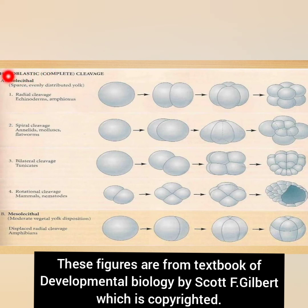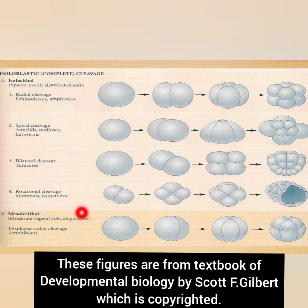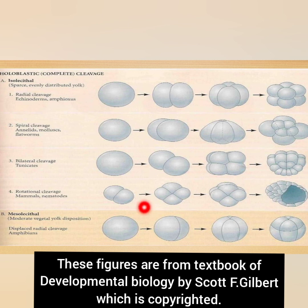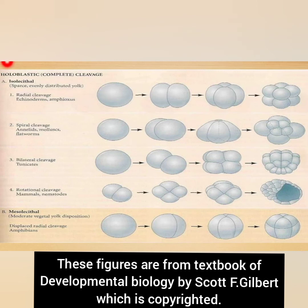We have now discussed all the isolecithal cleavage patterns in holoblastic complete cleavage: radial, spiral, bilateral, and rotational. Next, mesolecithal cleavage is also a complete cleavage, but the furrow moves slowly at the vegetal region, producing two blastomeres of unequal size. Larger blastomeres from the more yolk-rich vegetal pole cytoplasm are called macromeres, and smaller blastomeres from the animal pole are called micromeres, which divide faster. An example of mesolecithal cleavage is amphibians.